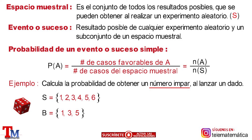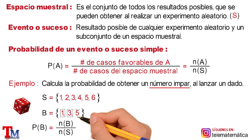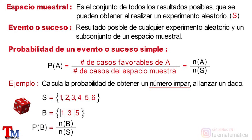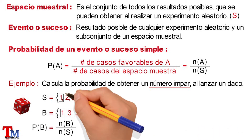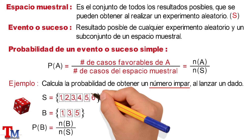Then, using the formula previously seen, we would have that the probability of event B will be equal to the number of cases of B divided by the number of cases of the sample space. We must determine the quantity of elements: 1, 2, 3, 4, 5, and 6 elements in the sample space.